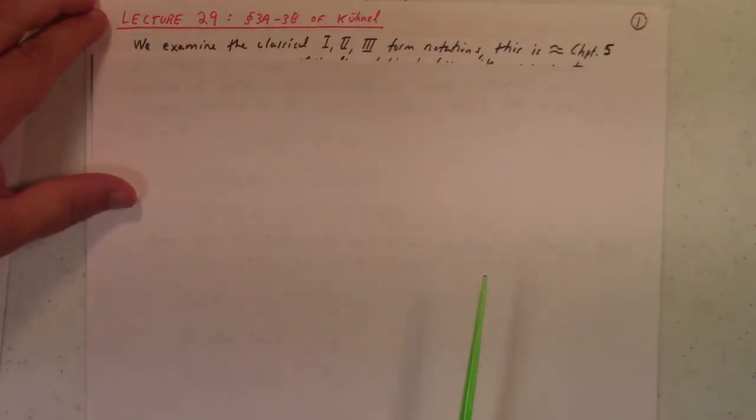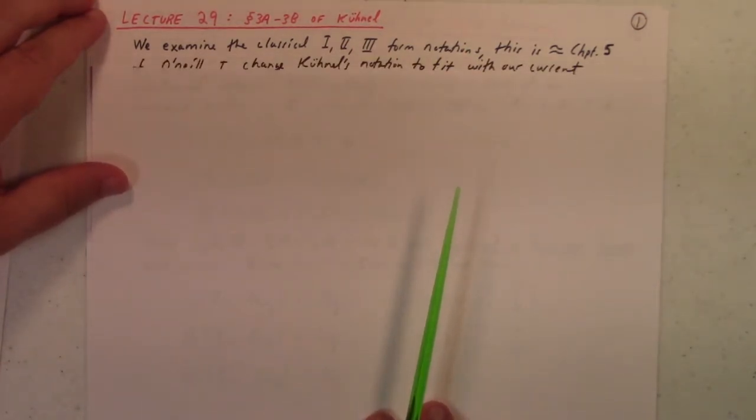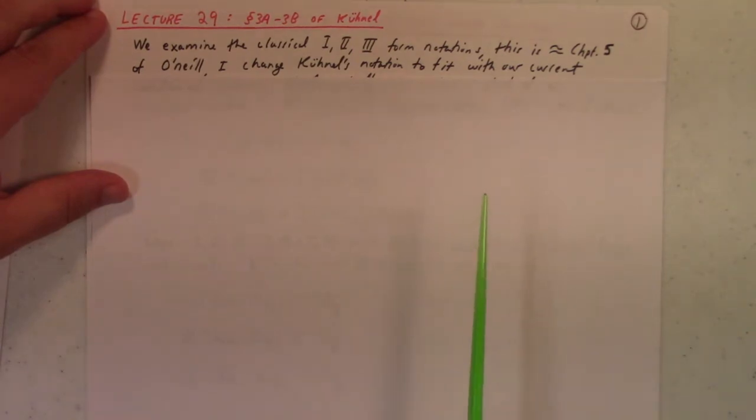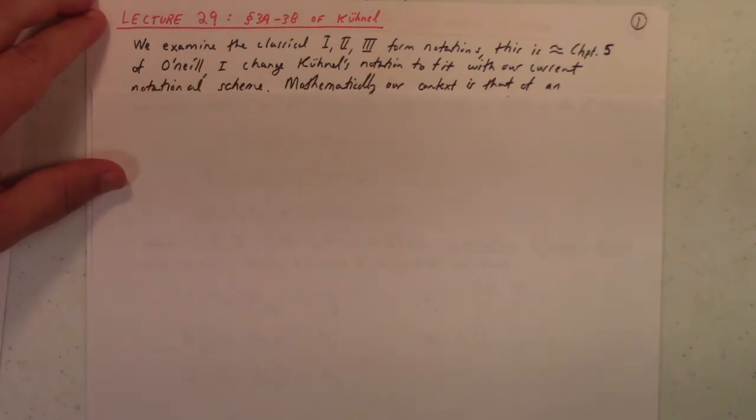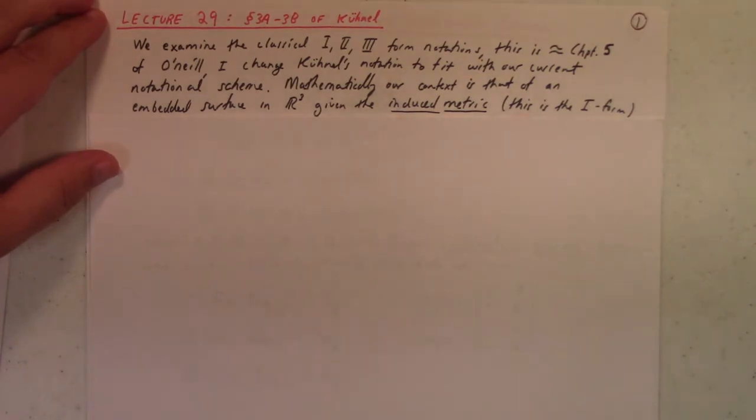The examples in that book are different, the techniques are different. It's a very nice thing to read following up from O'Neill. Anyway, so let's just get to it. What I want to describe mostly here today is the first, second, and third form notations. Essentially this is chapter 5 of O'Neill, and I'm not actually going to use Kühnel's notation. I'm going to instead try to fit with O'Neill's notation, which we've been using. So mathematically our context is that of an embedded surface in R3, given the induced metric.